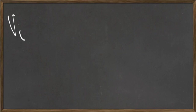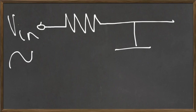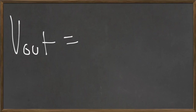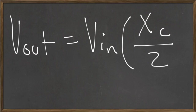For a low-pass filter, it's very similar to a high-pass filter except the positions of the capacitor and resistor are swapped. Coming off of Vin, you now have a resistor first, and then the capacitor is connected to ground. Vout is measured across the capacitor. There's a slightly different formula for Vout for the low-pass filter: Vout equals Vin times the reactance divided by the impedance. Recall that for the high-pass filter it was the resistance divided by the impedance; for the low-pass filter it's the reactance divided by the impedance.